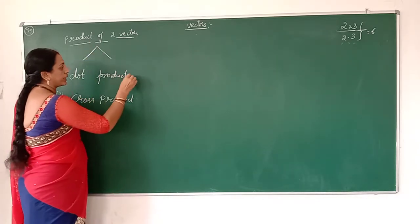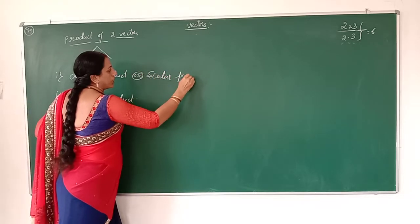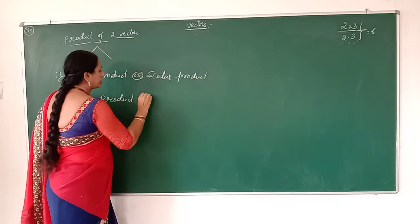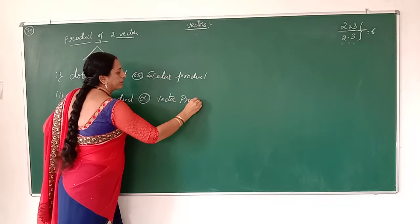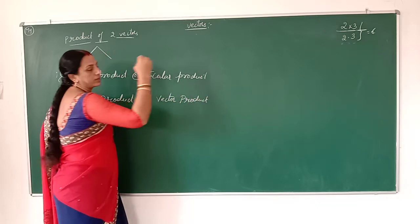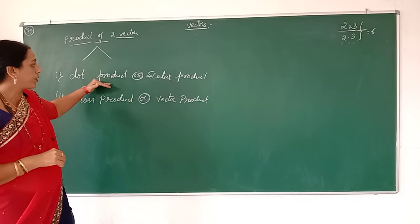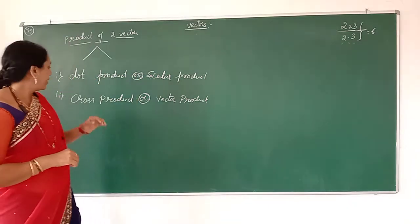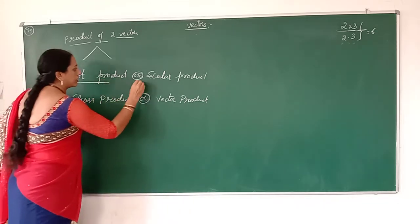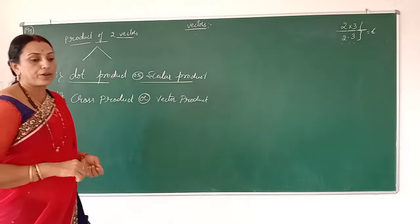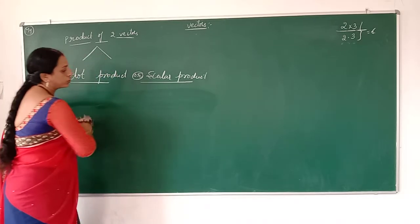The dot product of two vectors is also called the scalar product, and the cross product is also called the vector product. These are the two different types of product of two vectors. Now we will discuss the conditions for the dot product of two vectors.